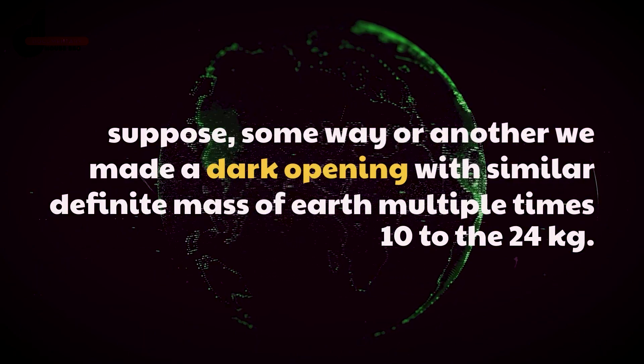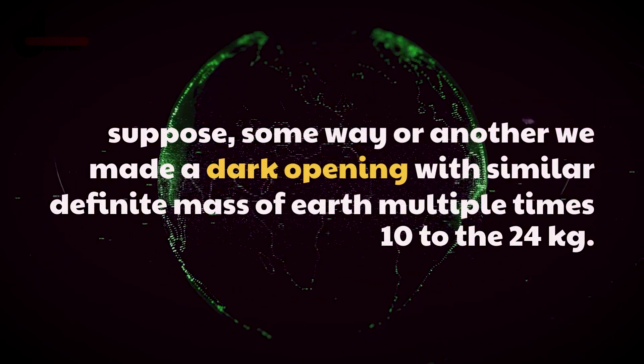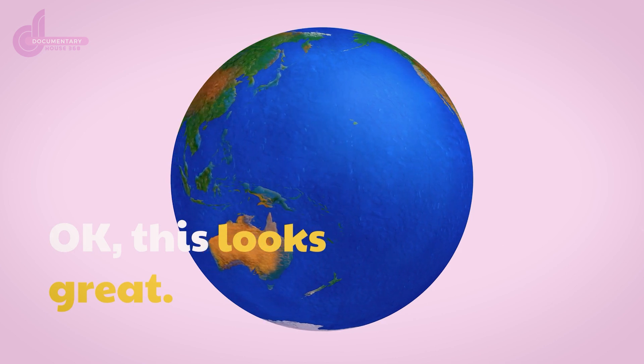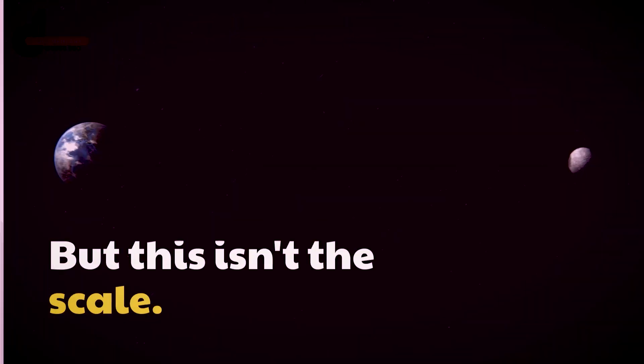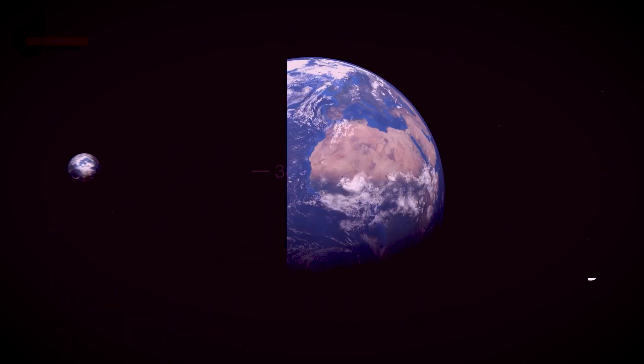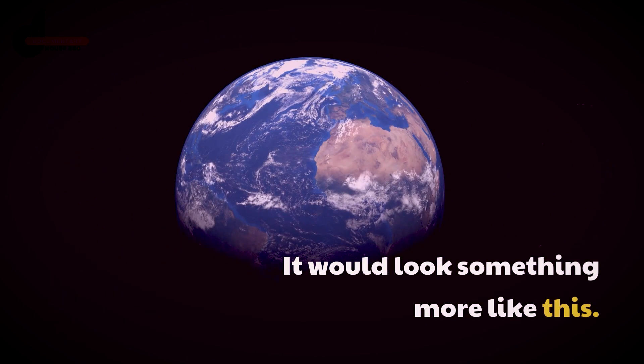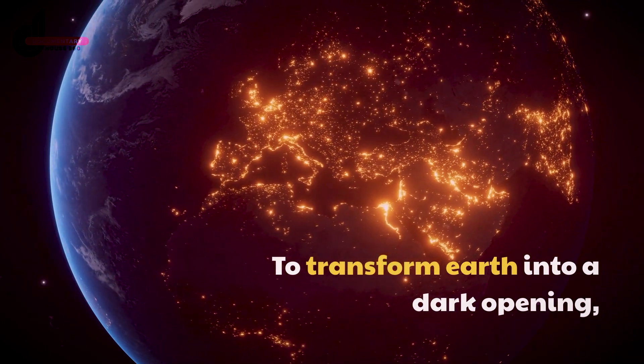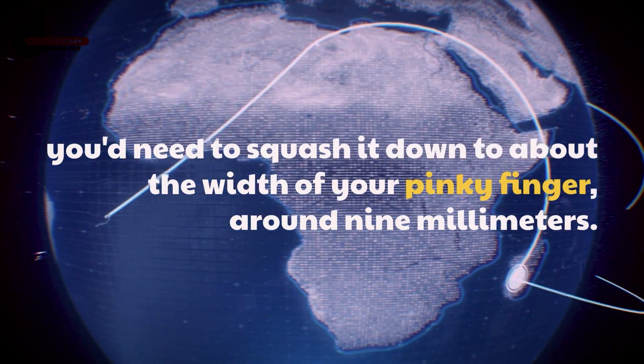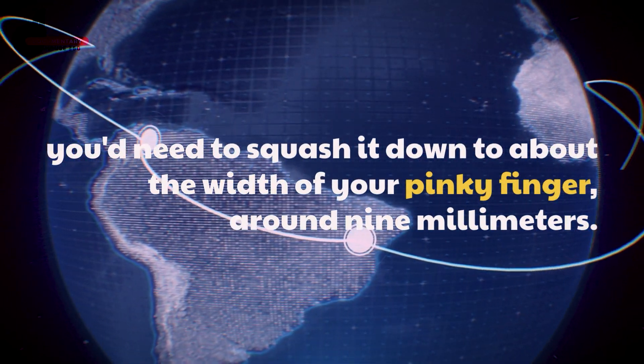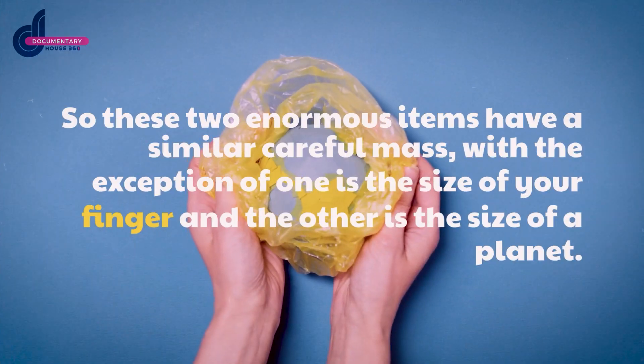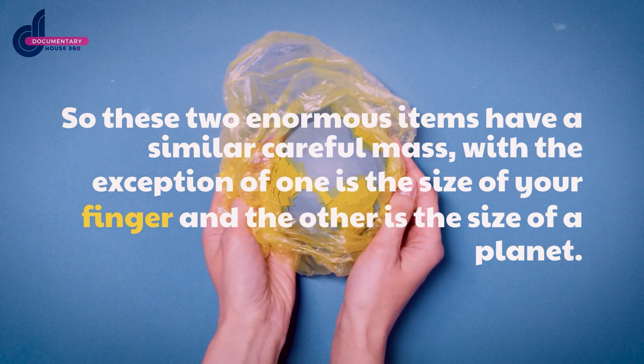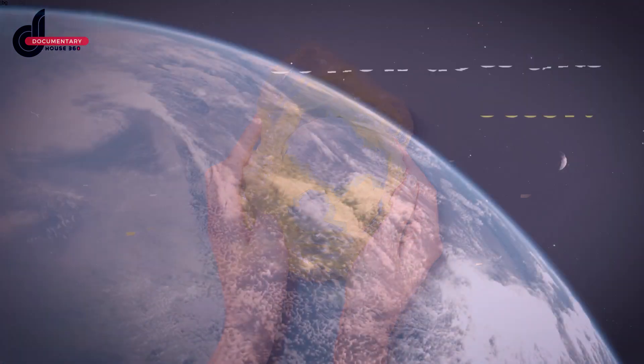Suppose somehow we made a black hole with the same exact mass of Earth, 6 times 10 to the 24 kilograms. Okay, this looks great, but this isn't to scale. It would look something more like this. To transform Earth into a black hole, you'd need to crush it down to about the width of your pinky finger, around 9 millimeters. So these two enormous objects have the same exact mass, except one is the size of your finger and the other is the size of a planet. So how does this occur?